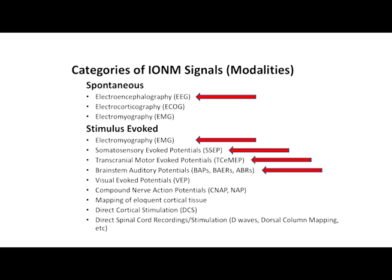The first category is spontaneous ones, which, like EEG, are just happening — the body is generating these signals spontaneously; we don't provoke or do anything to elicit them. Electrocorticography is an EEG recorded directly from the surface of the brain, and EMG — any kind of muscle activity — can also be spontaneous.